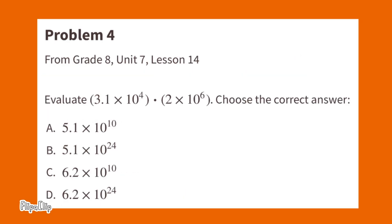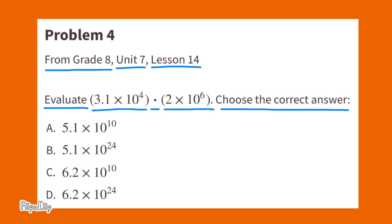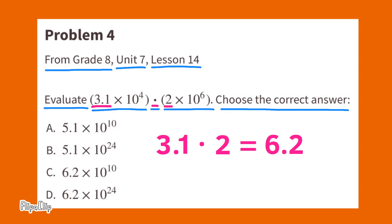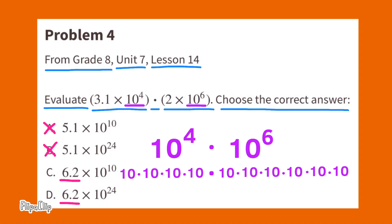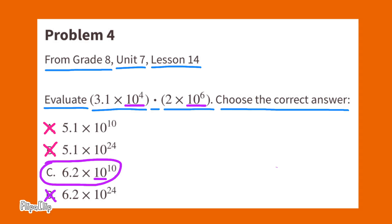Number 4, from 8th Grade, Unit 7, Lesson 14. Evaluate 3.1 times 10 to the 4th times 2 times 10 to the 6th. Choose the correct answer. 3.1 times 2 equals 6.2, so that eliminates A and B. 10 to the 4th times 10 to the 6th equals 10 to the 10th, which eliminates D. So the correct answer is C: 6.2 times 10 to the 10th.